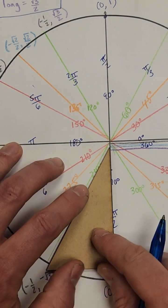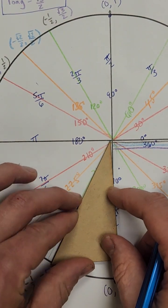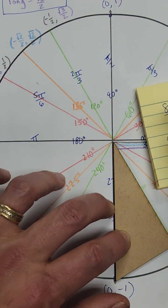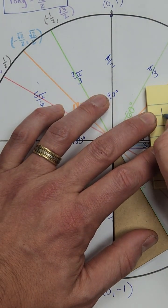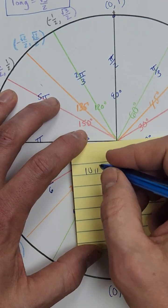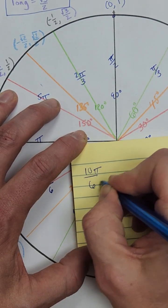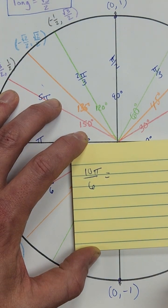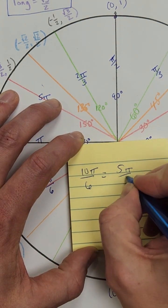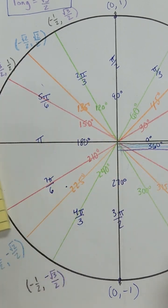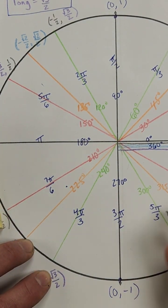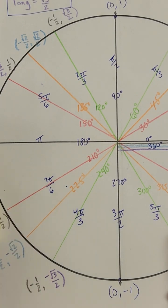That was our ninth sixth. Going over here now, we would have our tenth one — 10π over six. Two goes into both of those, so that reduces to 5π/3 radians. So this would be five thirds π, or 5π/3.